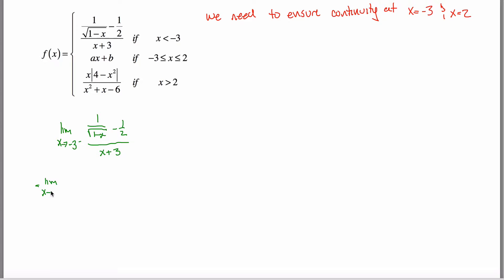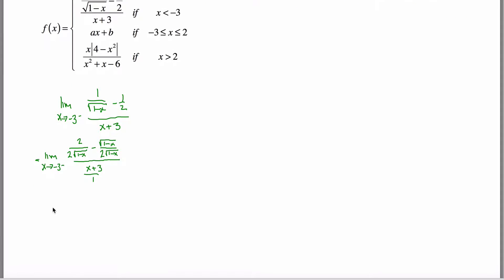This equals the limit as x approaches -3 from the negative side. We have a fraction inside a fraction, so our strategy is to make this one fraction over one other fraction. Getting a common denominator, I multiply one side by 2/2 to get 2 over 2√(1−x), and the other by √(1−x)/√(1−x). The numerator becomes (x+3)/1. Combining gives [2 − √(1−x)] over [2√(1−x)], all divided by (x+3) — which I rewrite as multiplying by 1/(x+3).